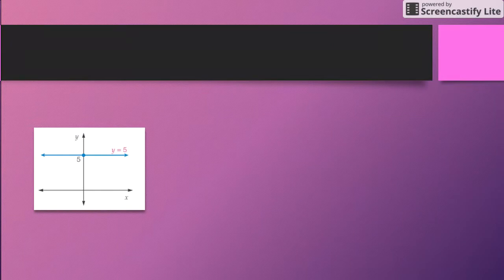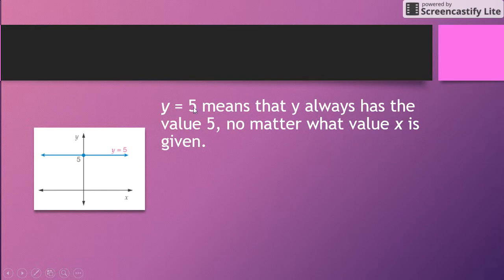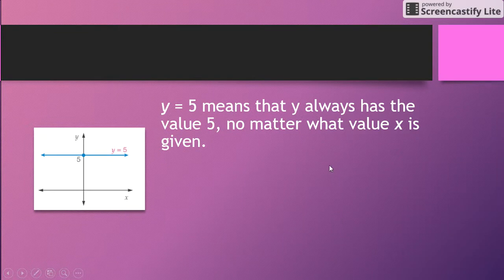So if you're looking here, you've got an equation that says y equals 5. When y equals 5, it means that y always has the value 5, no matter what the value x is. So it could be (2, 5), (3, 5) - as long as it's got a 5,